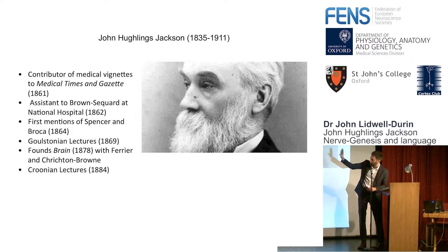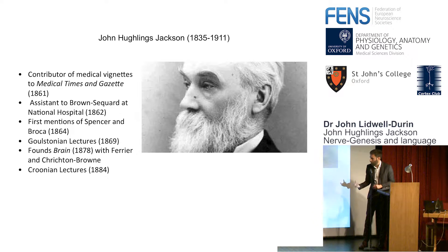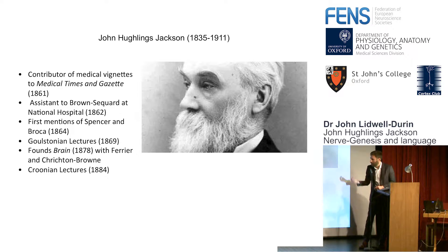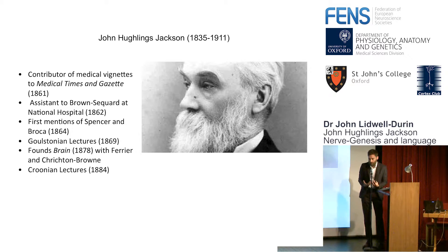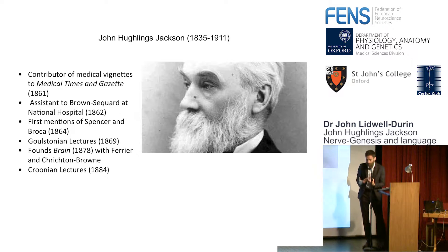If you're not familiar with him, I have some quick bullet points. He's an assistant to Brown-Séquard in 1862. He's very interested in the work of Herbert Spencer and Broca, beginning to tackle those in his writings in 1864. He gives a number of extremely prominent lectures — he gives the Golstonian lecture in 1869. The journal Brain is founded with Ferrier and Crichton-Brown in 1878. Hughlings Jackson is an integral figure within British science.